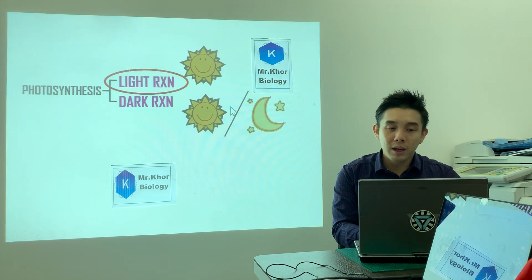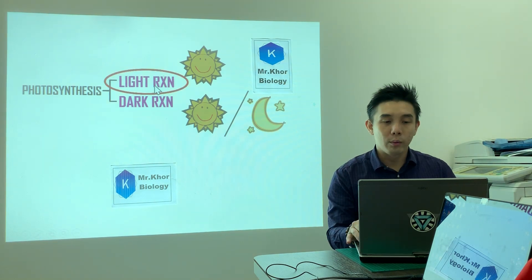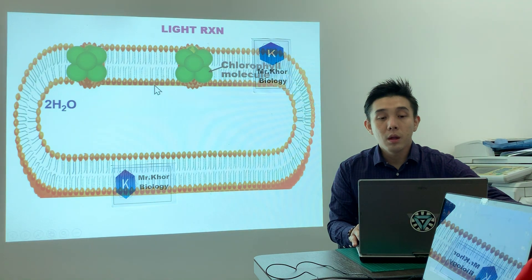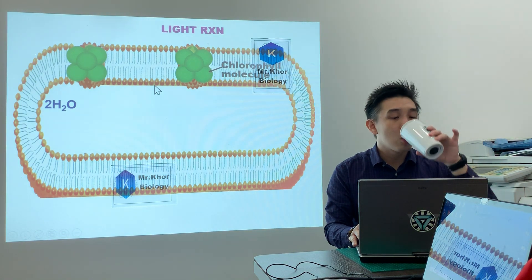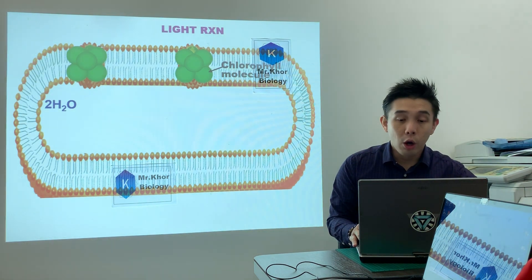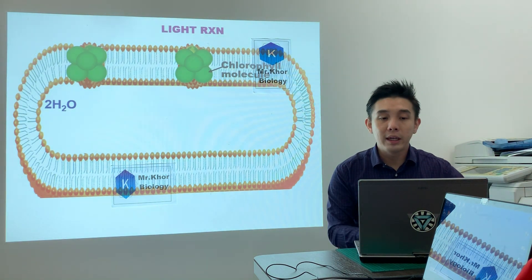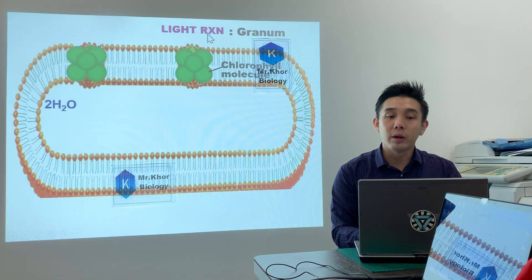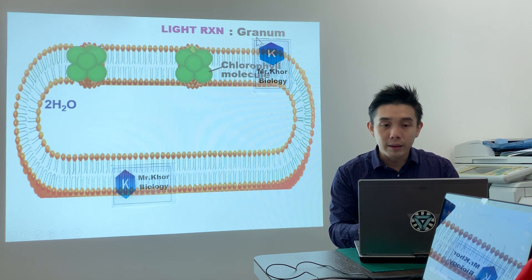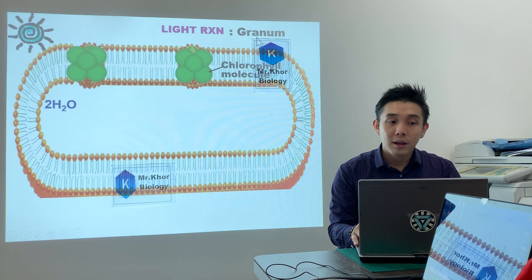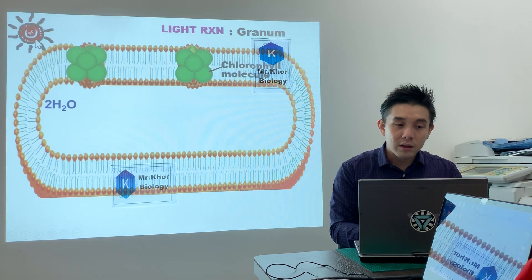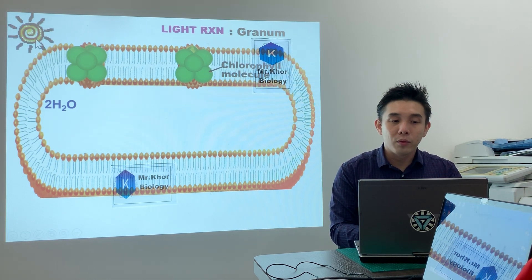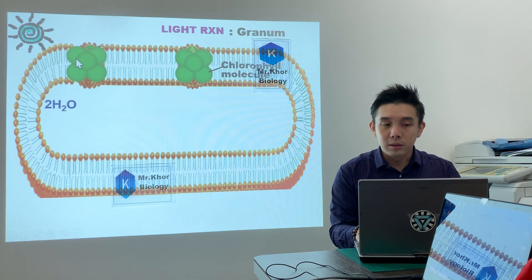Let's look at light reaction. First point: light reaction occurs in the granum. Second point: sunlight is absorbed by chlorophyll.